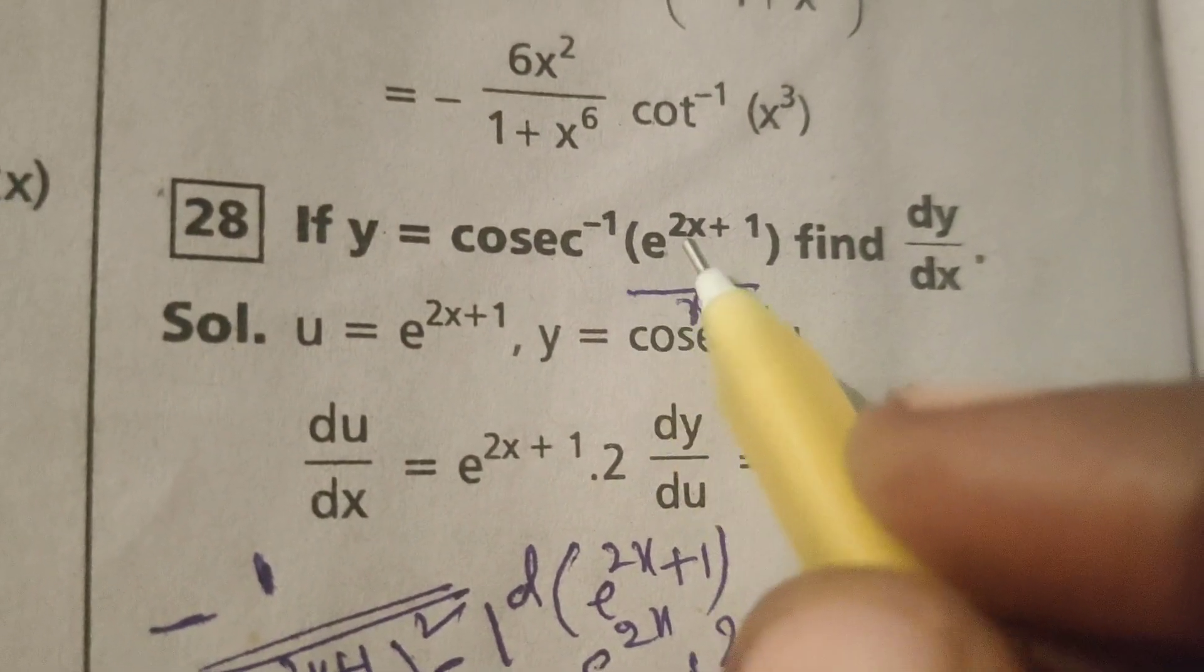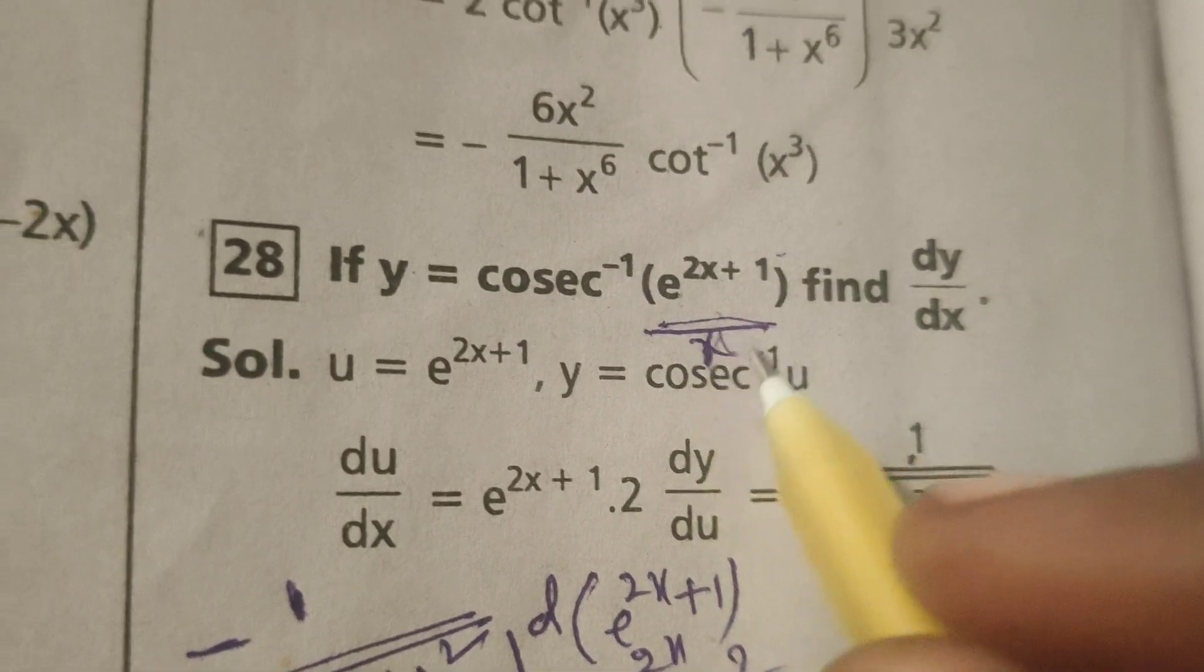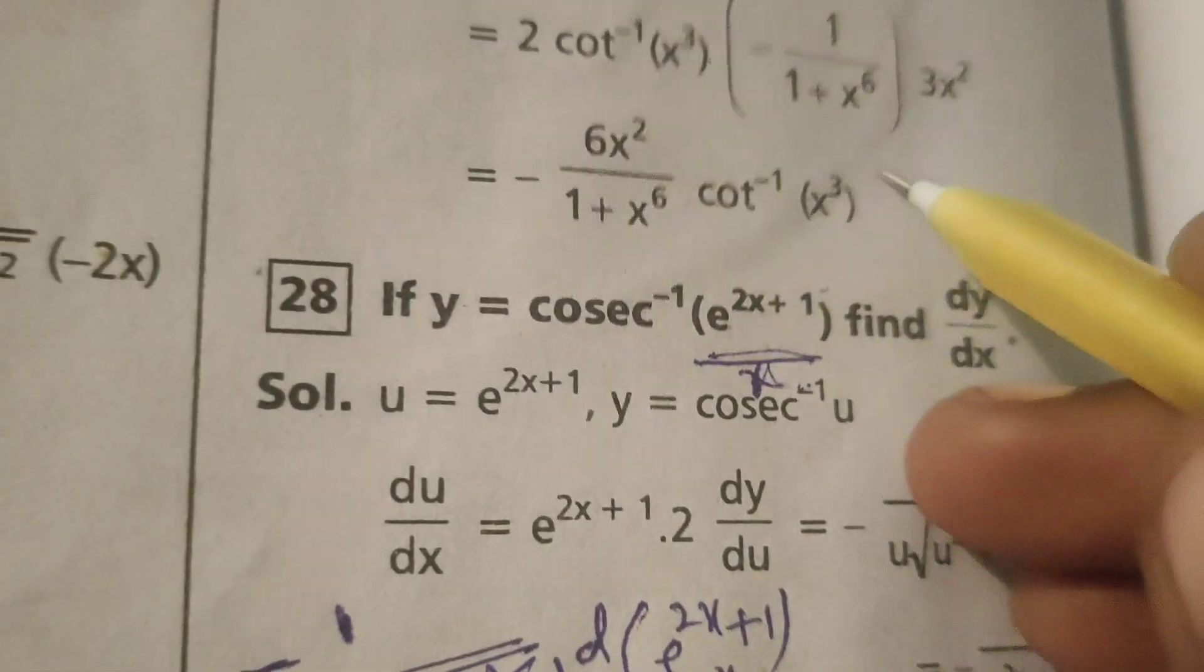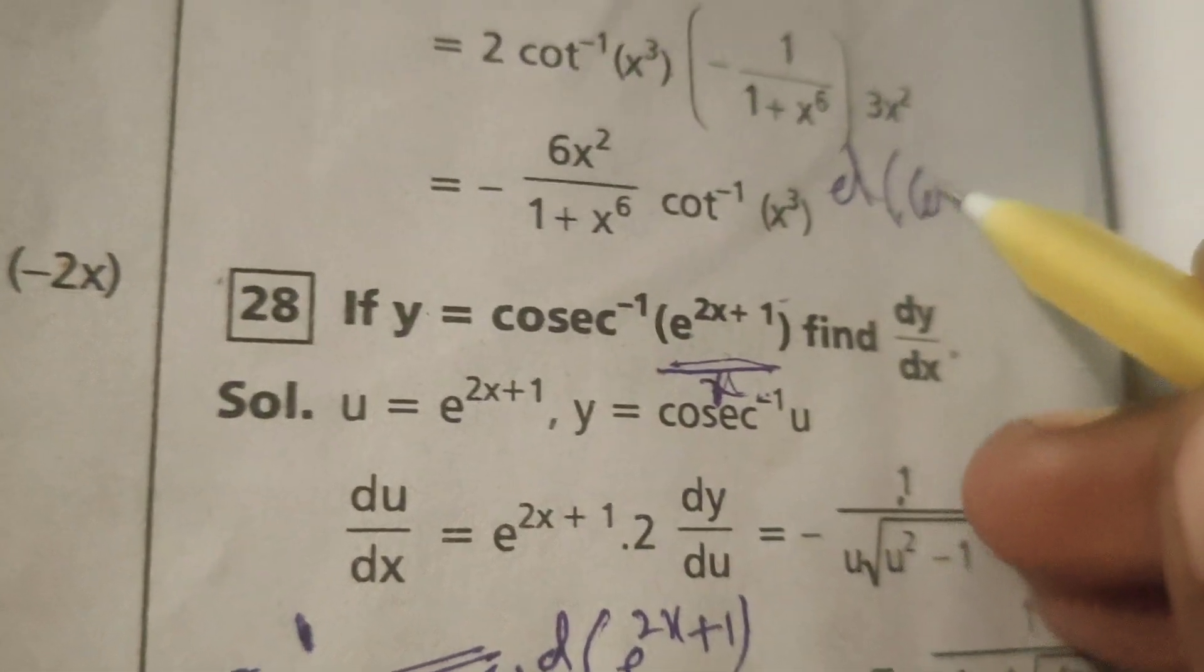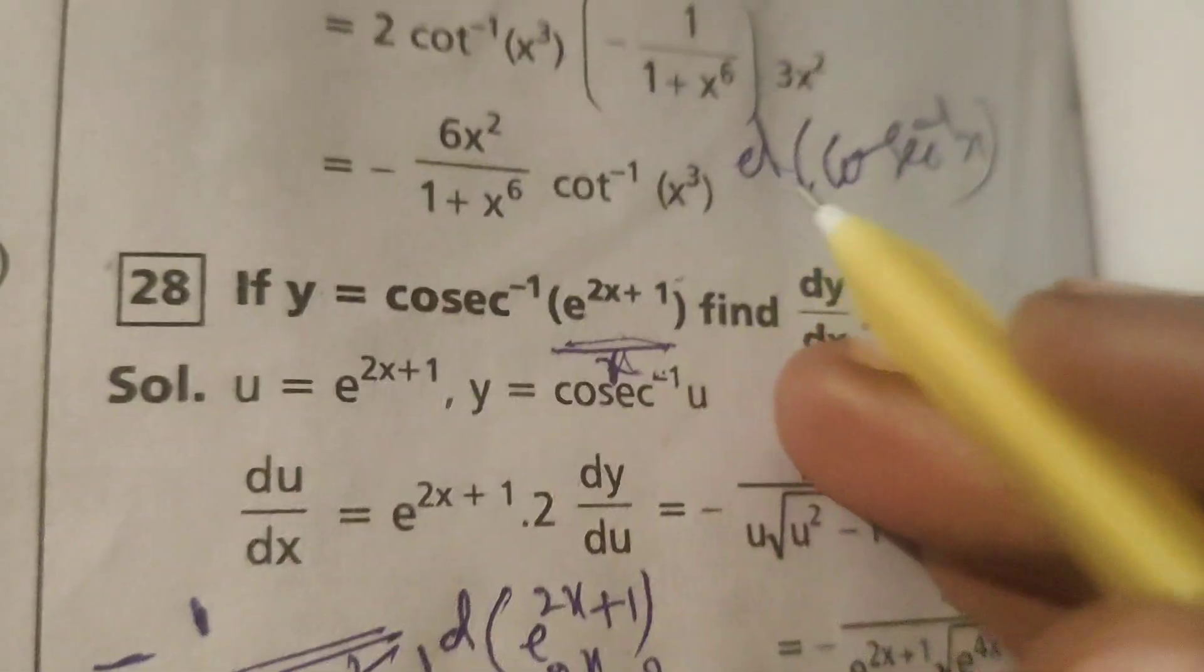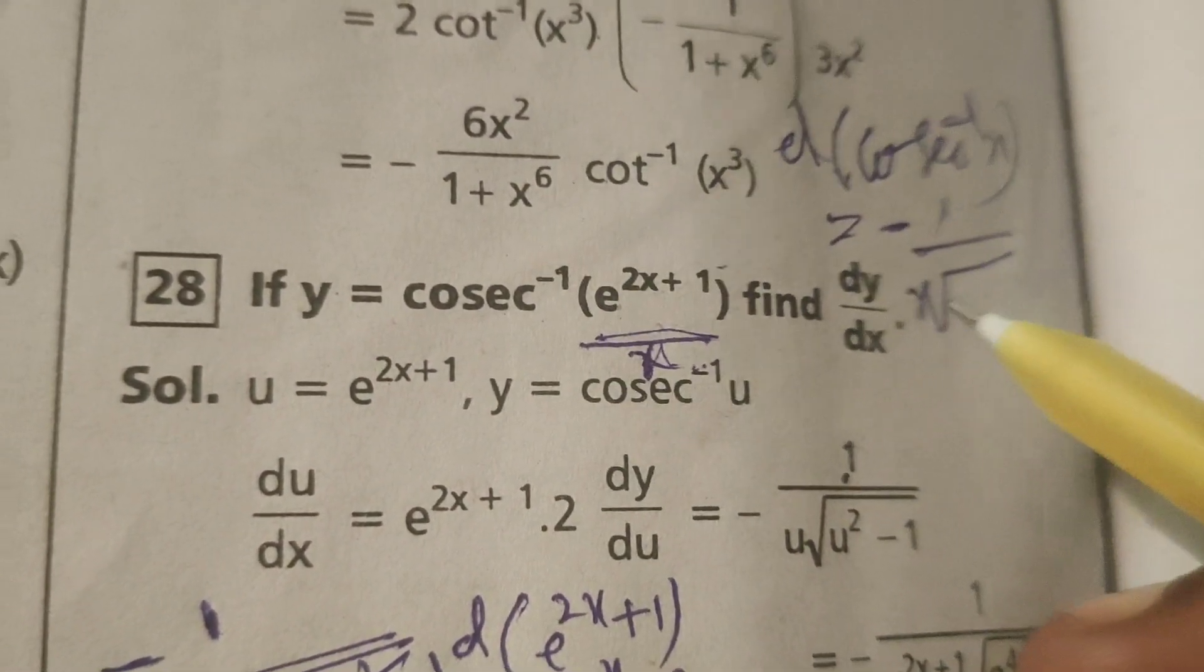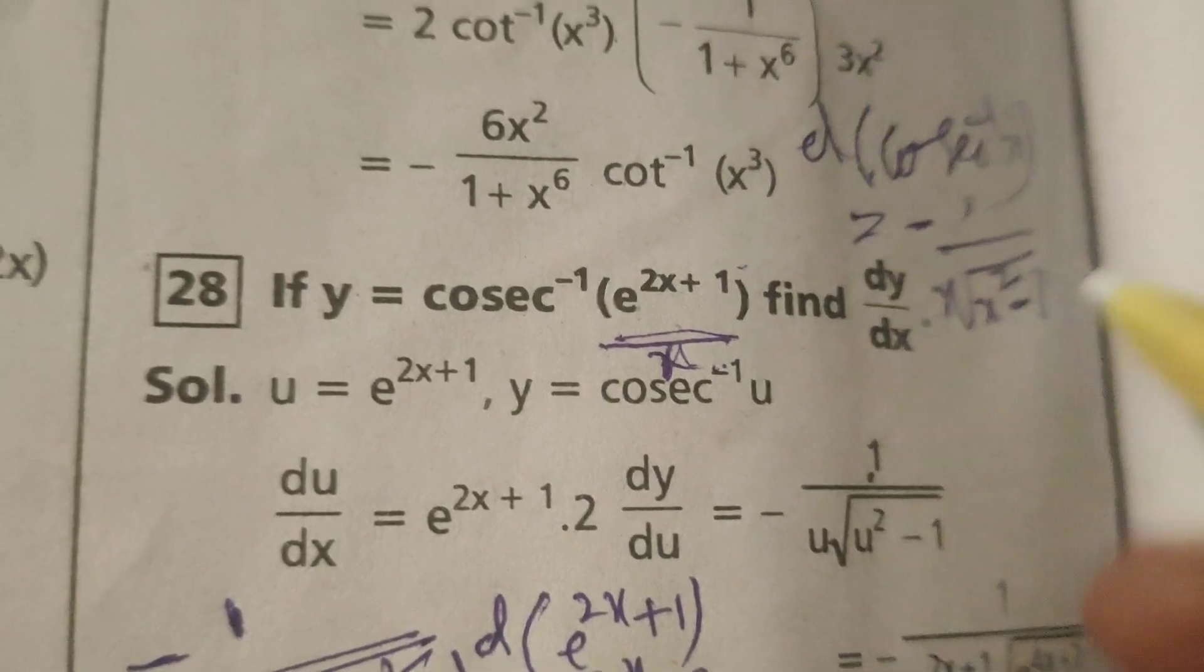Here in place of e power 2x plus 1, consider suppose x. What is the differentiation of cosecant inverse x formula? Minus 1 by x root x square minus 1.